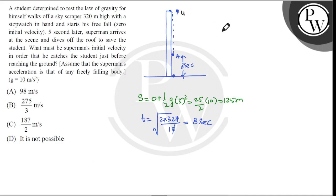Initial velocity will be u and net displacement is 320. So 320 is equal to ut plus 1 by 2 acceleration 10 into 3 square. 320 is equal to 3u plus 9 into 10 is 5, which is 45.